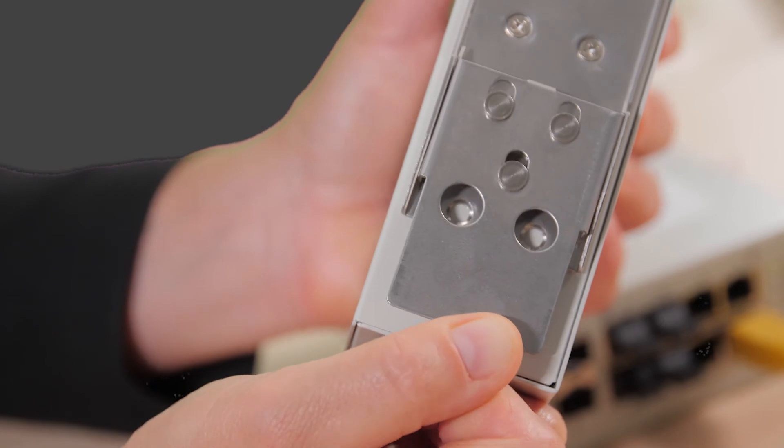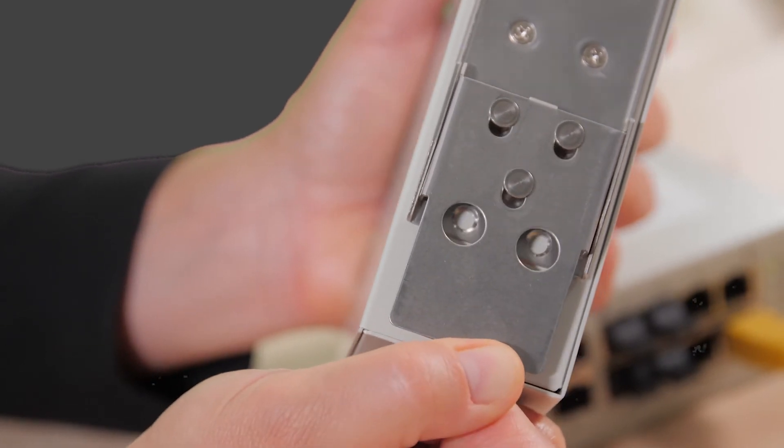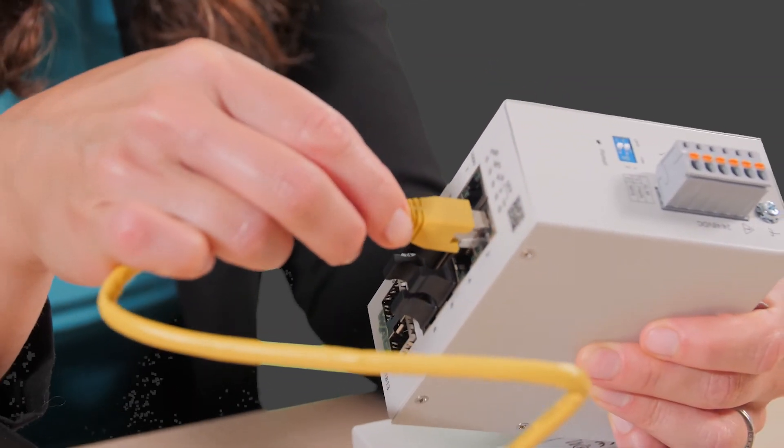There's also the option to disable unused ports and enable firewall functions via an access control list, even to 32 entries per service control. The switches also support Ethernet Ring Protection Switching or ERPS for up to two rings per switch, along with loop detection and storm control on each port.